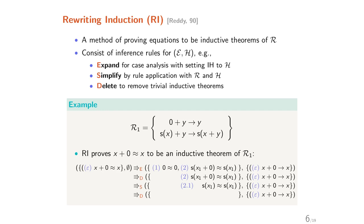Rewrite induction is a method of proving equations to be inductive theorems. It consists of inference rules such as expand, simplification, and deletion. For the same example with TRS R1, we want to prove the equation x + 0 = x, and we use these inference rules to make the set become an empty set. Thus, we can say that the equation is an inductive theorem of R.